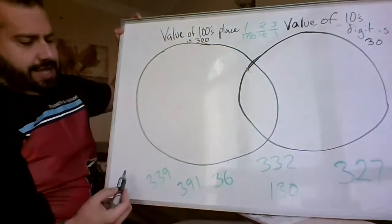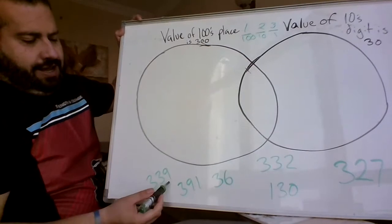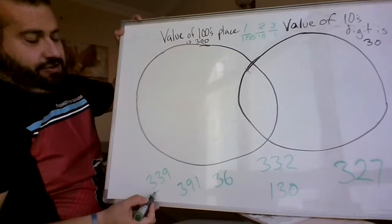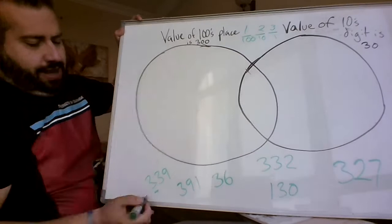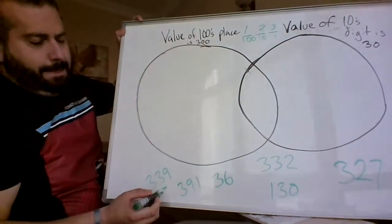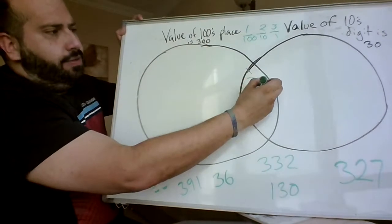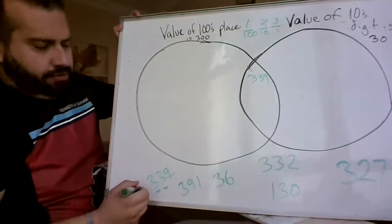So if we look down here, we've got our first number. It is 339. So in the 100s place, we have a 3. But also in the 10s place, we have a 3. So this we know goes in the middle, 339. We cross it off so we remember.